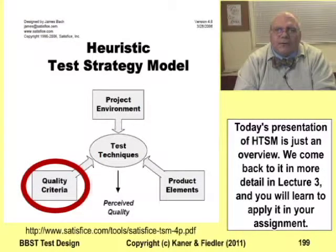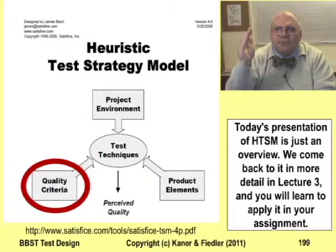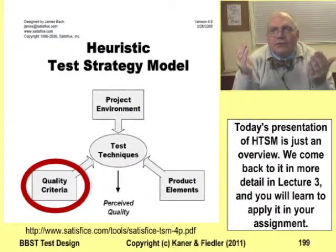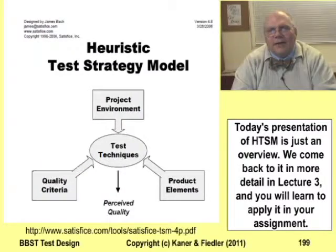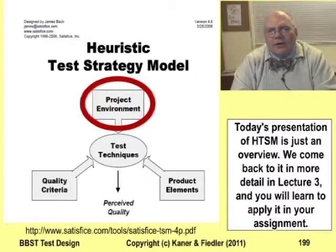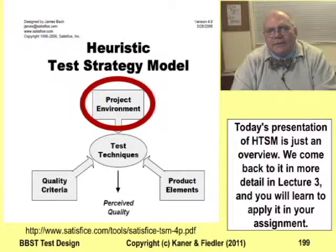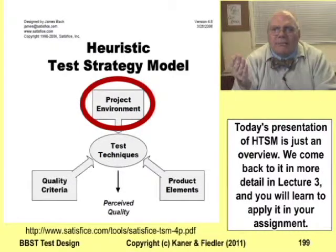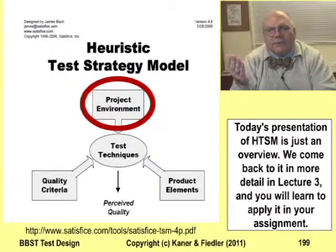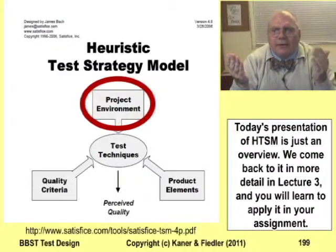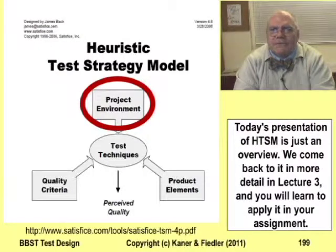For example, usability is a quality criterion. You could walk through the list of features and ask for each one, how usable is it, and what would unusability look like for this kind of feature? As a third dimension, Bach characterized the project context. For example, the skills of the test team are part of the context. If the testers know a lot about this kind of application, they can test it differently from testers who know a lot about programming but nothing about this type of application. He called this list a project environment.